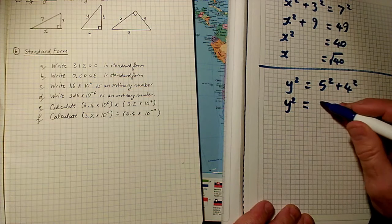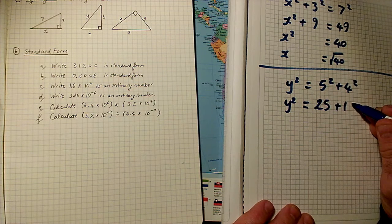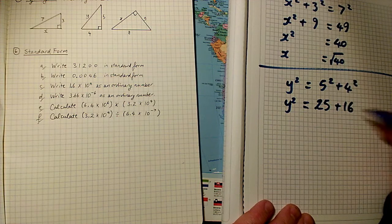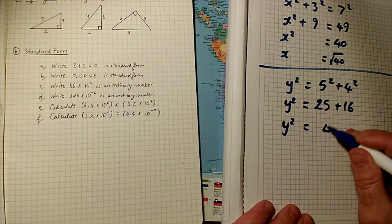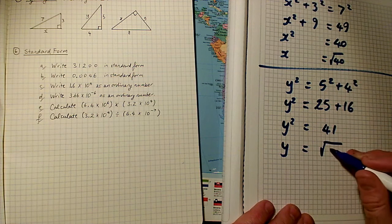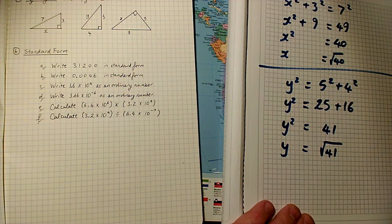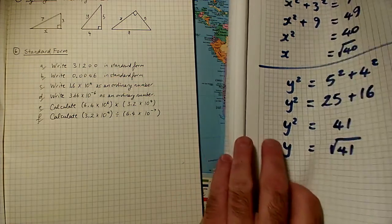So y squared equals 5 squared is 25 and 4 squared is 16. So y squared equals 25 plus 16, which is 41. So y is the square root of 41 on this occasion. And again, that's 6 point something. You can do that on a calculator.